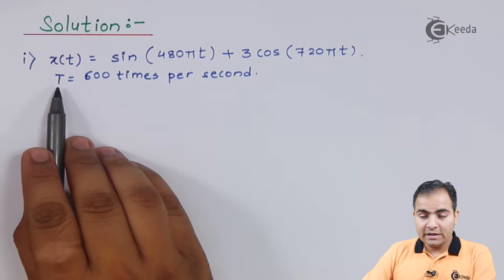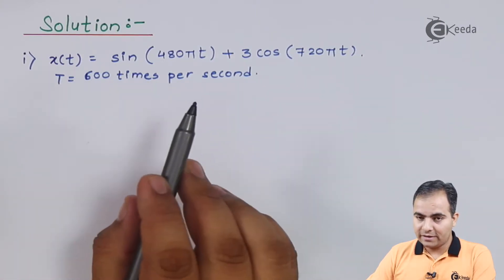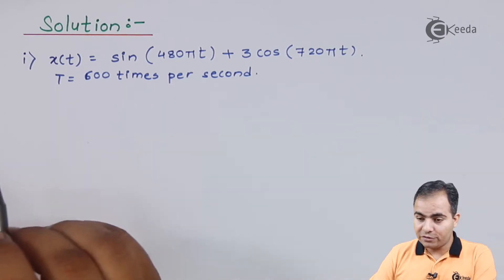This is my x(t). Now T is given as the sampling period. So we have 600 samples per second.